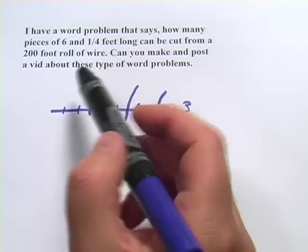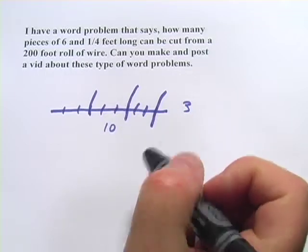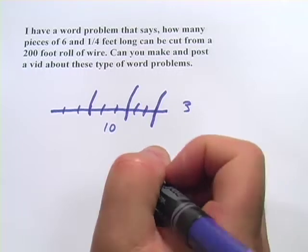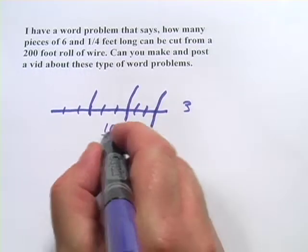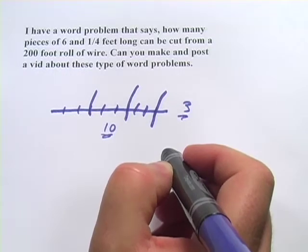But how do you do that when you've got numbers like six and a fourth and two hundred? You can't really do that in your head very easily. Well the thing to know is that this is really just about division. When you do these problems, you take the whole and you divide it by the length that you're cutting it up into.